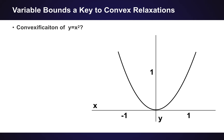What can you do to convexify this without knowing anything else about the problem? You can say you can be inside of this parabola cone. This blue area is indicating a convex feasibility set, which includes all the points of the original quadratic constraint.